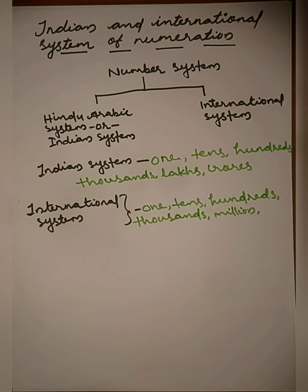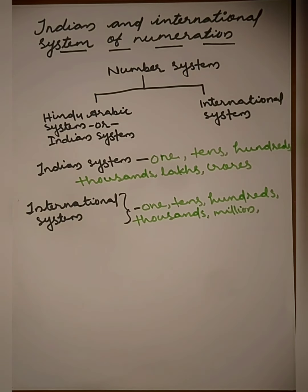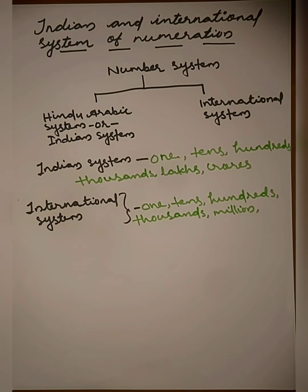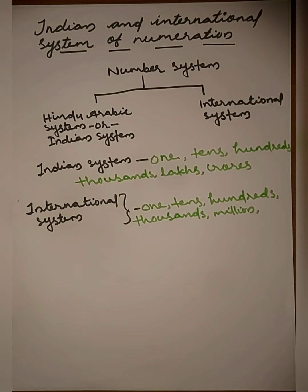Next we discuss the Indian and International systems of numeration. The number system is divided into two: the Indo-Arabic or Indian system and the International system. The Indian system uses ones, tens, hundreds, thousands, lakh, crore, etc. The International system uses ones, tens, hundreds, thousands, millions, and billions. One million equals one thousand thousands.